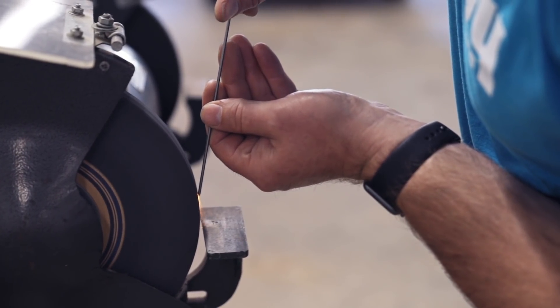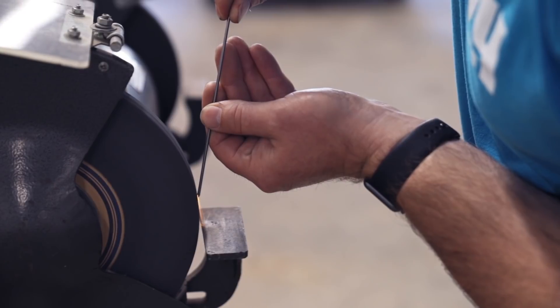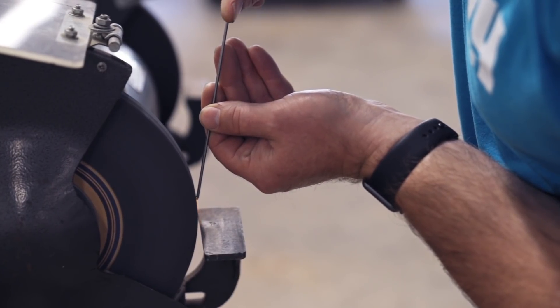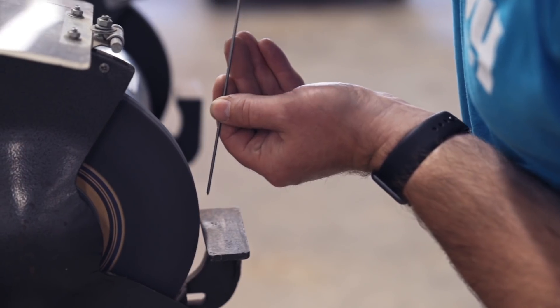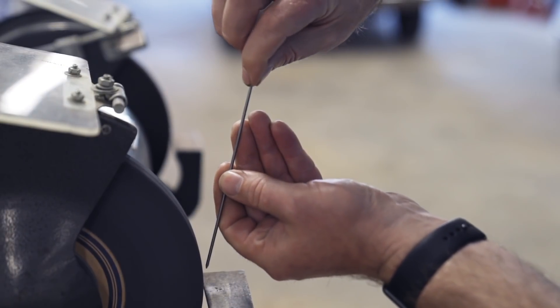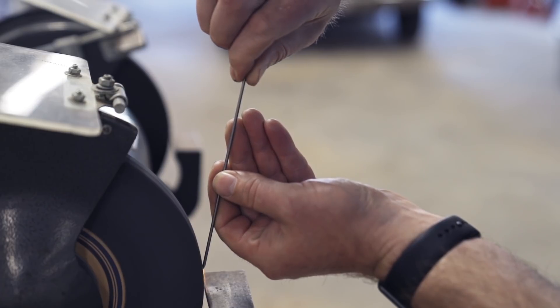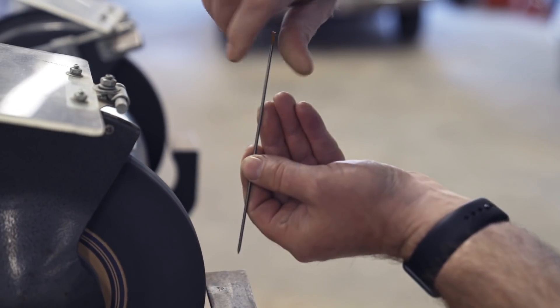Some people hold their tungsten vertically to a grinder like this, which just seems dangerous to me. Now if you have something like a piranha tungsten grinder that has a really fine diamond blade on it, those are going to grind sideways, which is fine because they're so smooth.